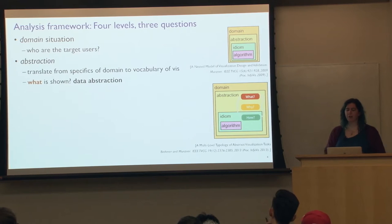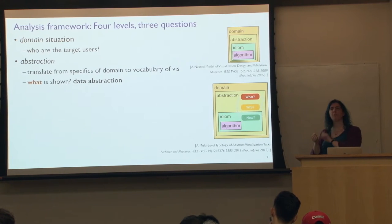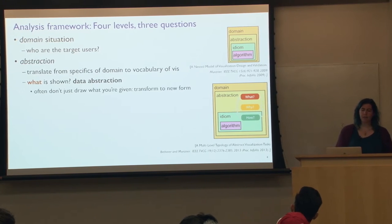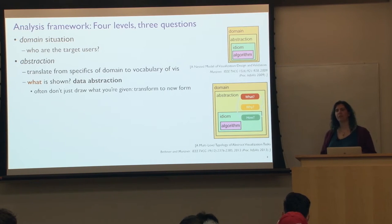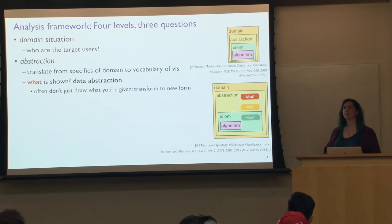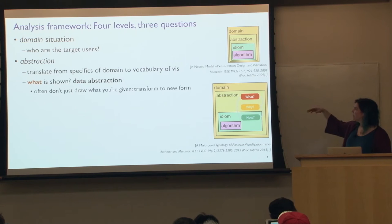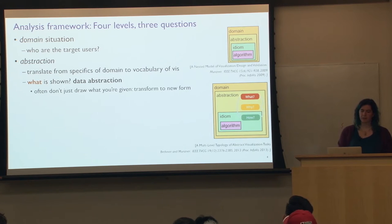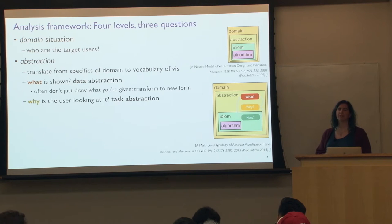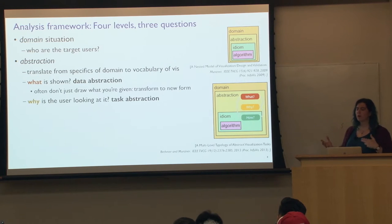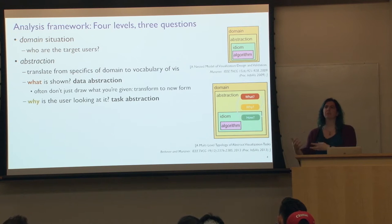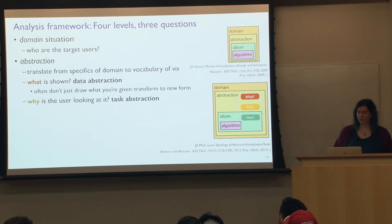At the abstraction level, we go from domain-specific language to things we can discuss in a completely domain-independent way — whether the domain is physics, chemistry, finance, or journalism. I divide this into: what is being shown, which I call the data abstraction, and why the user is looking at the data, which I call the task abstraction. The challenge is you often take the data you're given and transform it. So we map data and tasks from domain-specific things into a vocabulary of visualization that we can reason about.